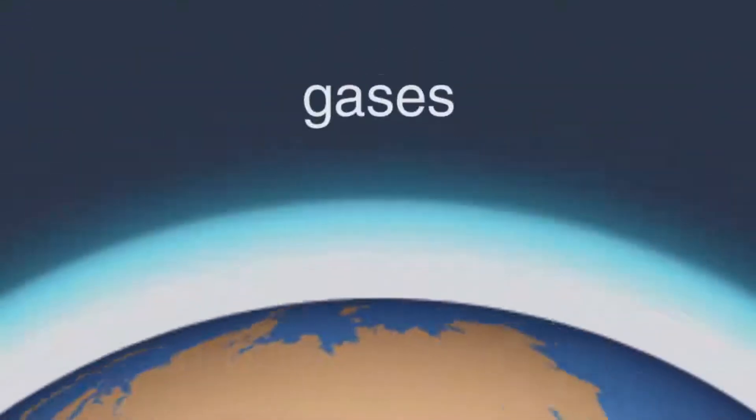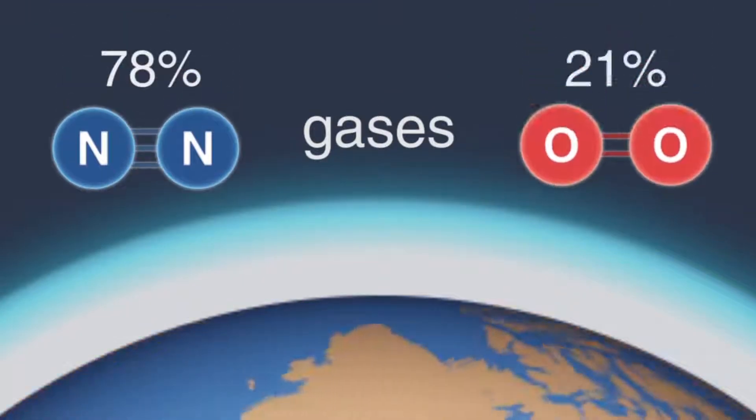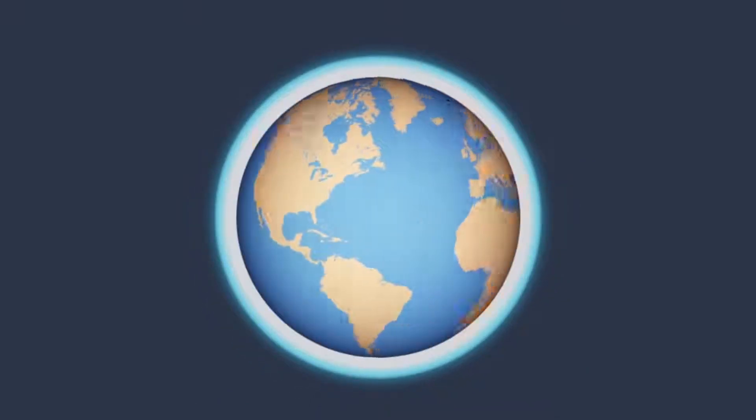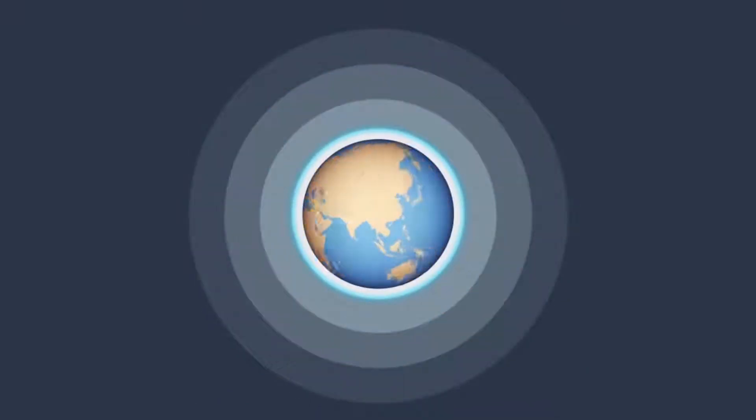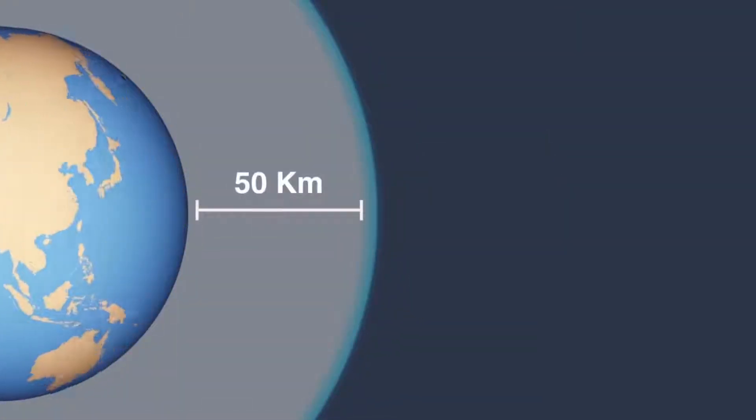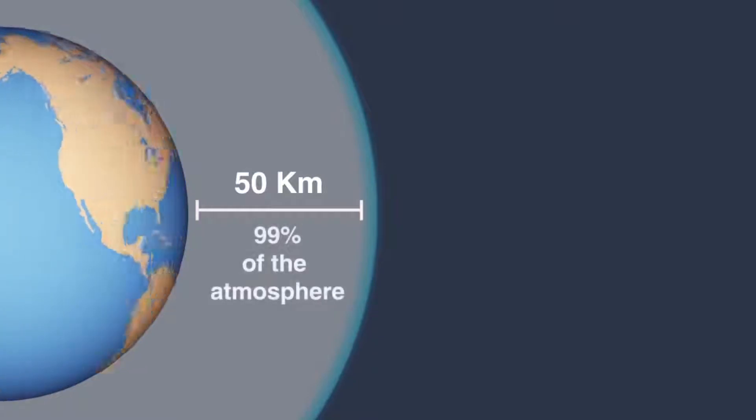Our atmosphere is made up of gases, mostly nitrogen and oxygen. They're held to the earth by gravity, a sort of ocean of air. Because air is compressible, it gets less and less dense as you get further from the earth. Let's consider the first 50 kilometers where 99% of the atmosphere is found.